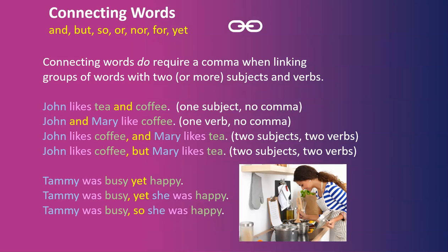Connecting words do require a comma when linking groups of words with two or more subjects and verbs. For example: 'John likes tea and coffee' — one subject, no comma. 'John and Mary like coffee' — one verb, no comma. 'John likes coffee and Mary likes tea' — two subjects and two verbs, so you need a comma: 'John likes coffee, but Mary likes tea.' Another example: 'Tammy was busy, yet happy' — no comma required. But 'Tammy was busy, yet she was happy' — two subjects, two verbs, so a comma is required before the connector.